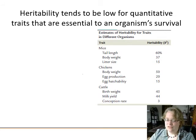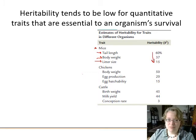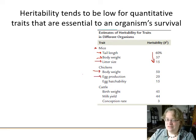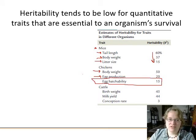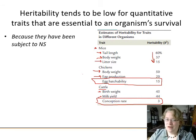Heritability tends to be pretty low for quantitative traits that are essential to survival. In mice, tail length has higher heritability than litter size, which is already near-maximized for fitness. In chickens, egg production is more heritable than hatchability, which natural selection has already maximized. In cattle, milk yield is more heritable than conception rate, which has been heavily shaped by both natural and artificial selection over time.